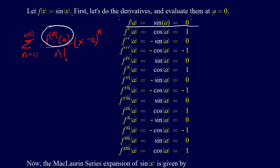The third derivative is just the derivative of the second derivative. The derivative of the negative sine is the negative cosine — that negative term stays — and the cosine of 0 is 1, so we get negative 1. Then when we take the derivative of the negative cosine, the derivative of the cosine is the negative sine, so the two negatives cancel, and we go back to the sine of a. And we can see here that now it starts to repeat.